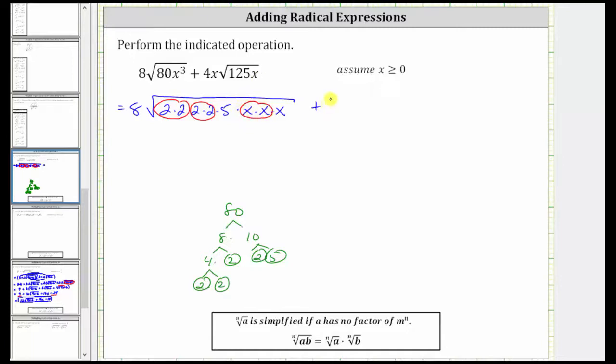And then we have plus 4x times the square root of 125x. Let's find the prime factorization of 125. 125 is equal to 25 times five. Five is prime, and 25 is equal to five times five. The prime factorization of 125 is equal to three factors of five. Let's write 125x as five times five times five times x. And five times five or five squared is a perfect square factor of 125x.